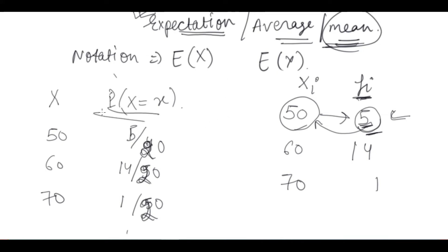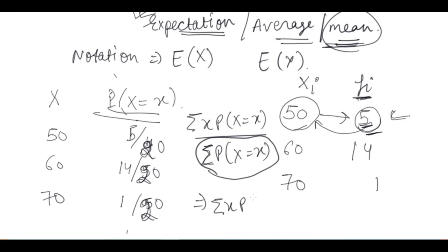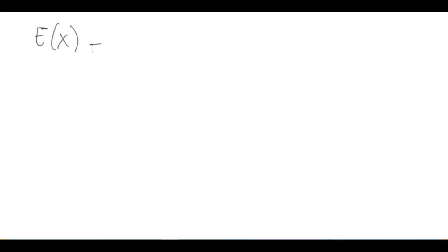So here we write the value x and its corresponding probability P(x). The formula becomes: E(X) equals summation of x times P(x). We have seen that when we have expectation of X, then E(X) equals summation of x times P(x), summed over all values of x.